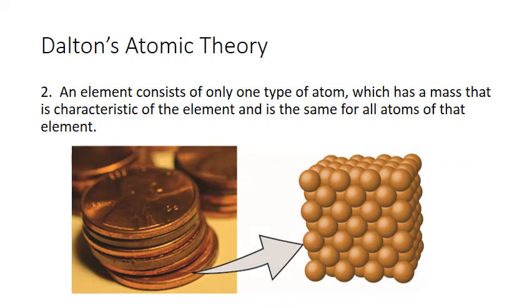So the second part of Dalton's atomic theory is that an element consists of only one type of atom which has a mass that is characteristic of that element and is the same for all atoms of that element. So if you consider copper, one of the primary elements found in a penny, Dalton's theory states that all the atoms of copper in that penny are identical to each other.